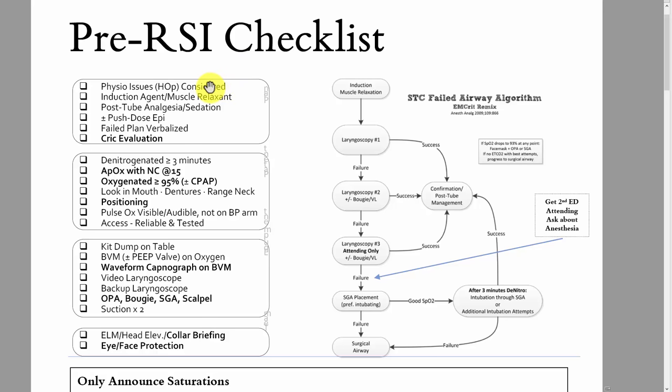If the patient's borderline hypotensive, they should have push-dose epi at the bedside and should have used induction agents and medication choices that are safe. They shouldn't be intubating with 20 mLs of propofol in a patient with a BP of 60 over 40. They should be using very low doses of propofol, lower doses of etomidate, or ketamine because they're hypotensive.